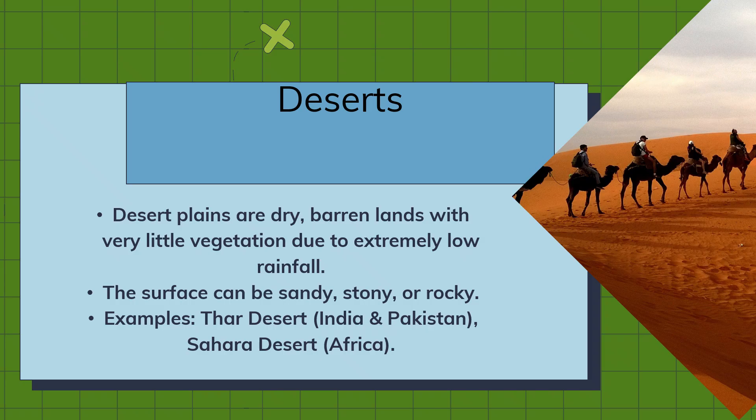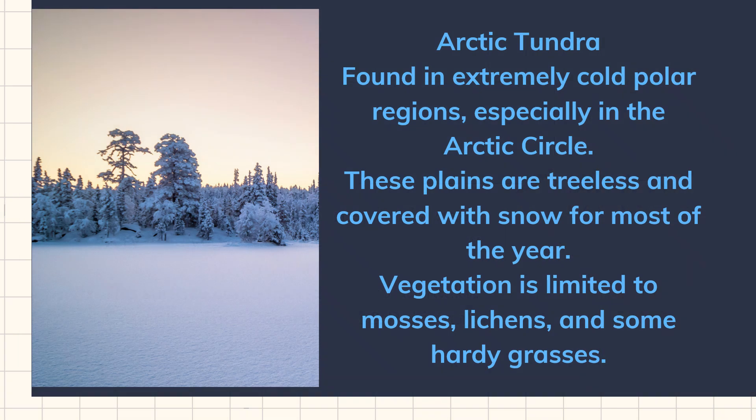One of the famous deserts in India and Pakistan is the Thar desert. Another is the world-famous and world-largest Sahara desert. We do not only have hot deserts — we also have cold deserts. For example, the Katpana Desert in Skardu, Pakistan is a cold desert.